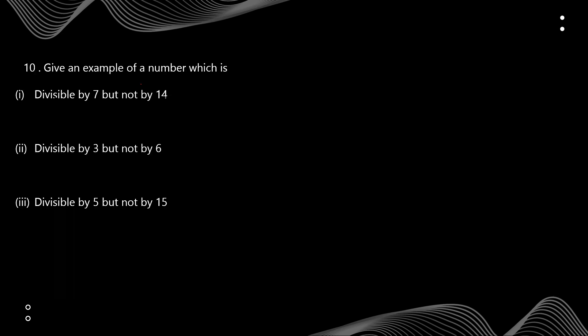Question 10: give an example of a number divisible by 7 but not by 14. Looking at the table of 7: 7×1=7, 7×2=14, 7×3=21. And for 14: 14×1=14, 14×2=28. So 21 is divisible by 7 but not divisible by 14. So 21 is our answer.